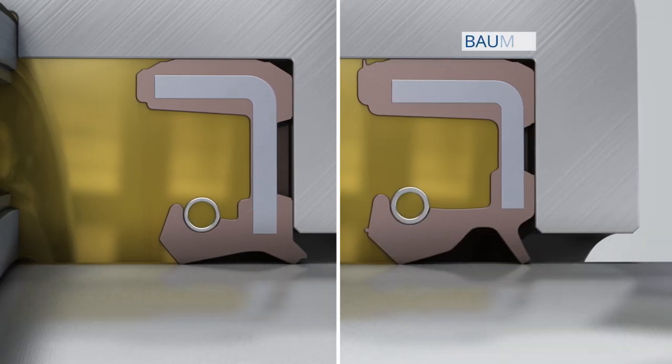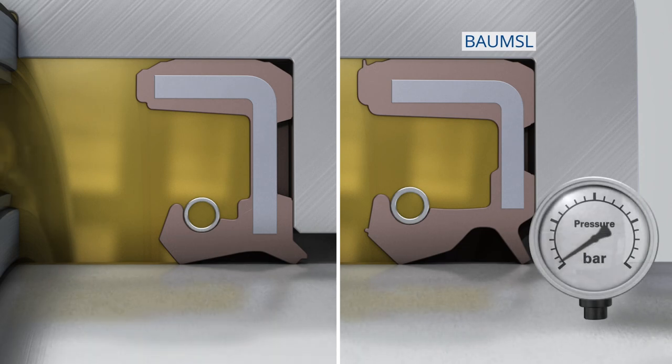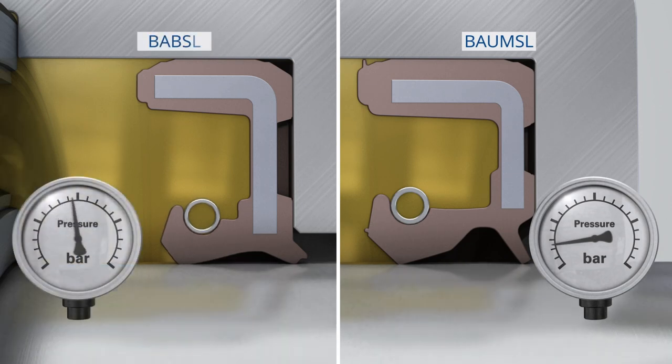Depending on the other operating conditions, standard simmerings can be used up to a maximum pressure difference of 0.5 bar. If the pressure is higher, an adapted pressure design is necessary.